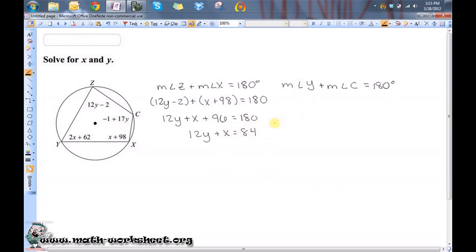So let's first substitute in these expressions for angle Y and angle C. So 2X plus 62 plus negative 1 plus 17Y equals 180.